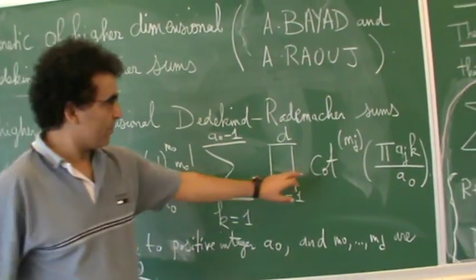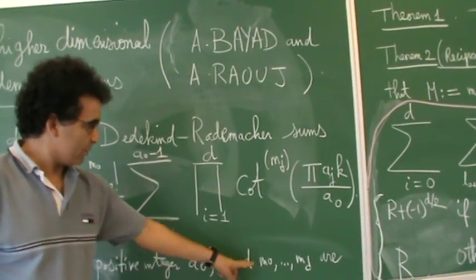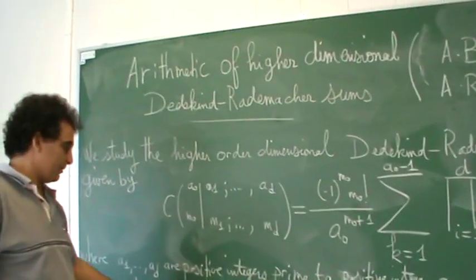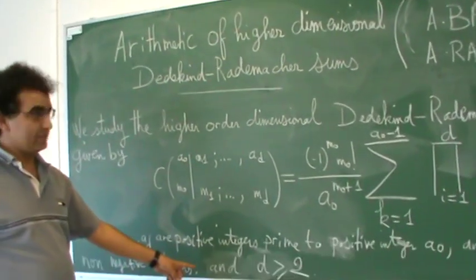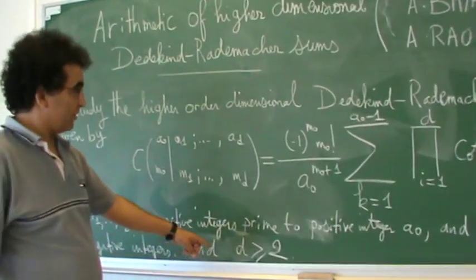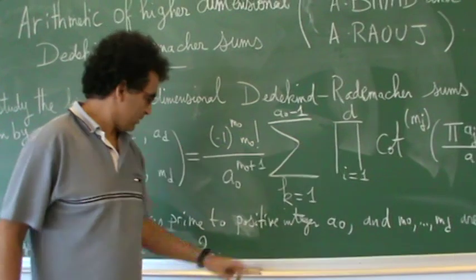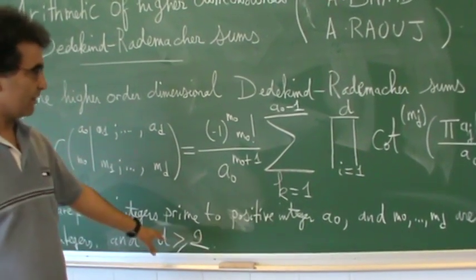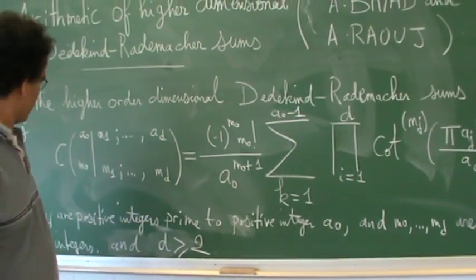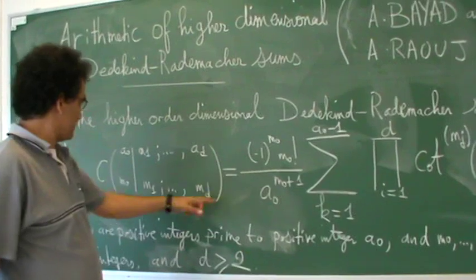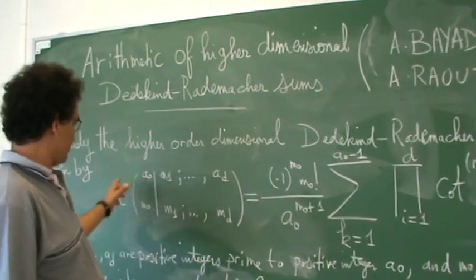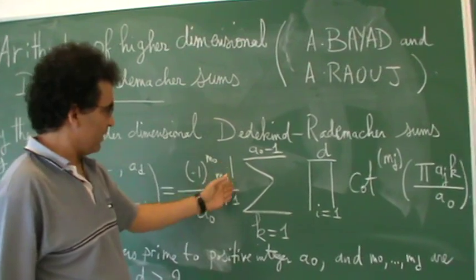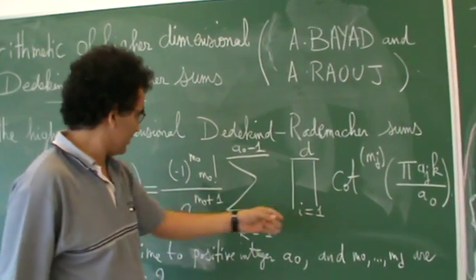The parameters M0 to MD are non-negative integers, and the parameter D is an integer greater than 2. The Dedekind-Rademacher sums are given by this expression.